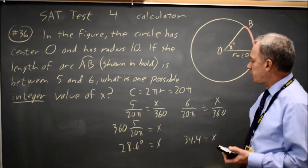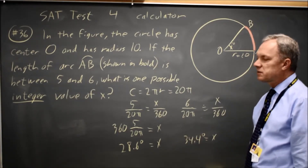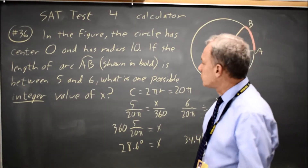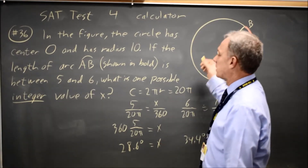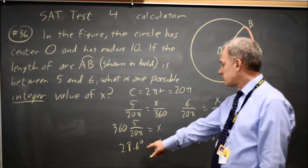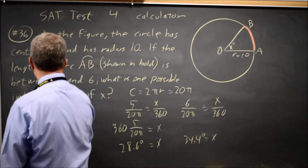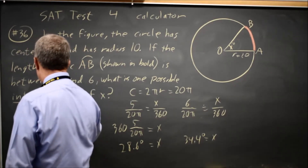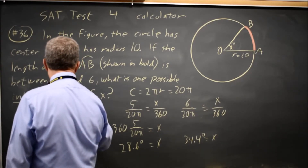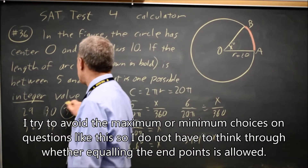So my angle could be anywhere from 28.6 degrees to 34.4 degrees, but they say this is an integer value. Integer means a whole number, which can be either positive or negative, but since this is an angle, we're going to take it as positive. I need a positive whole number between 28.6 and 34.4. I could choose 29, 30, 31, 32, 33, or 34. I worry about the numbers at the endpoints, so I'd probably pick something in the middle like 31.